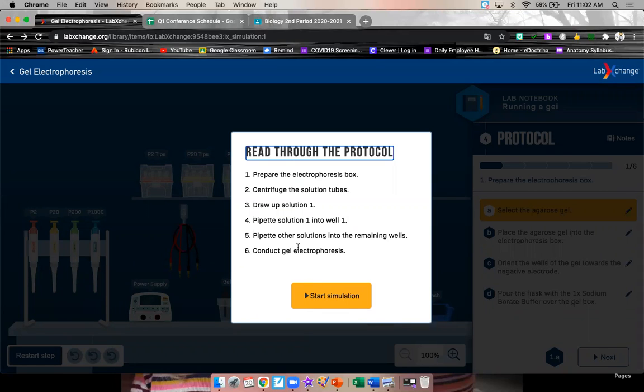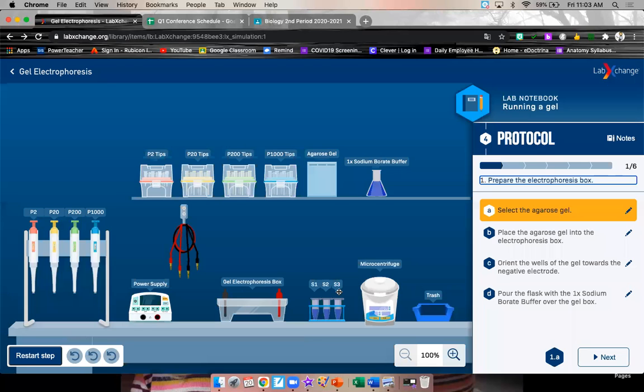So what are we going to do? We are going to prepare the electrophoresis box, centrifuge the solution tubes, and we're going to spin them around, draw up solution one, pipette solution one into the well, pipette the other solutions into the wells, and then conduct electrophoresis. So let's start.